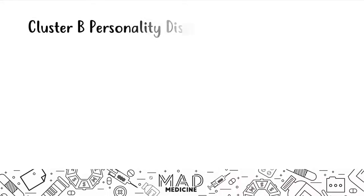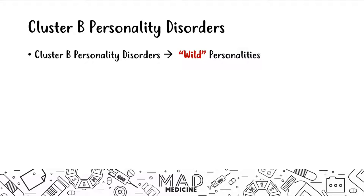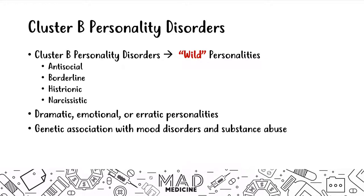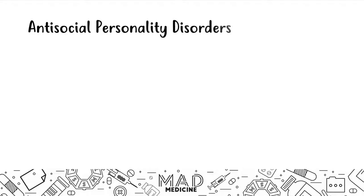Cluster B personality disorders are your 'wild' personality disorders — cluster A was 'weird.' In cluster B we have antisocial, borderline, histrionic, and narcissistic personality disorders. These patients tend to be very dramatic, emotional, or erratic — that's a key hallmark across all of them. There is also a genetic association with mood disorders and substance abuse disorders, as opposed to cluster A which was associated with schizophrenia.